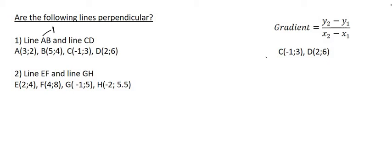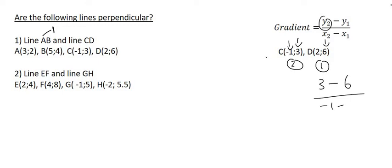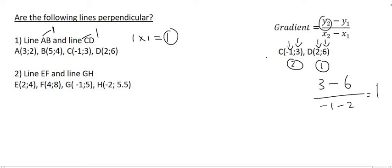Now let's find the gradient of CD. I'm going to call C point number 2 and D point number 1. The y value of point 2 is 3, minus the y value of point 1 which is 6, over the x value of point 2 which is minus 1, minus the x value of point 1 which is 2. Working this out gives 1. So line CD's gradient is also 1. These two lines are not perpendicular, because 1 times 1 is 1, not minus 1. In fact, because the two gradients are the same, they are actually parallel.